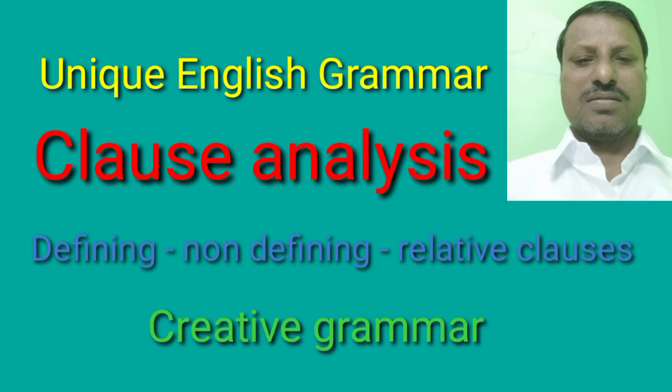Relative pronouns include: who, whose, whom — these are used for persons. 'Which' is a relative pronoun used for things. 'That' is a relative pronoun used for either persons or things. Some relative clauses begin with relative adverbs: 'where' describes place, 'when' describes time, 'how' describes reason, and there are many more relative adverbs.